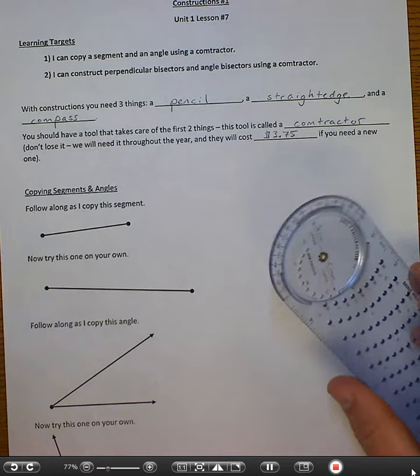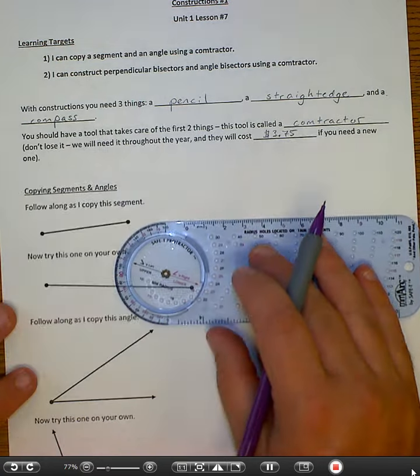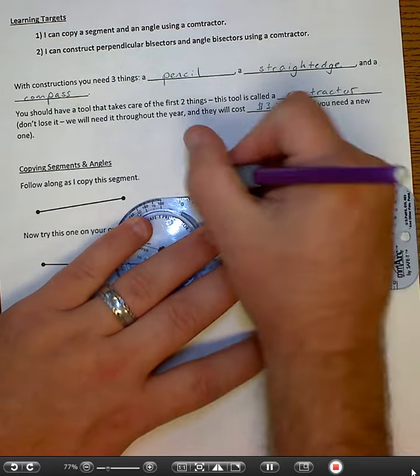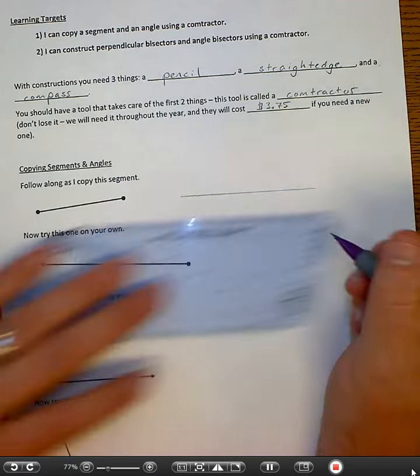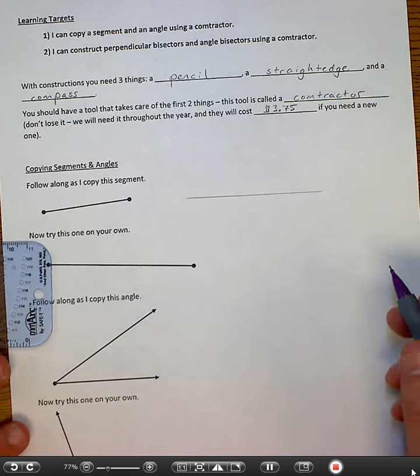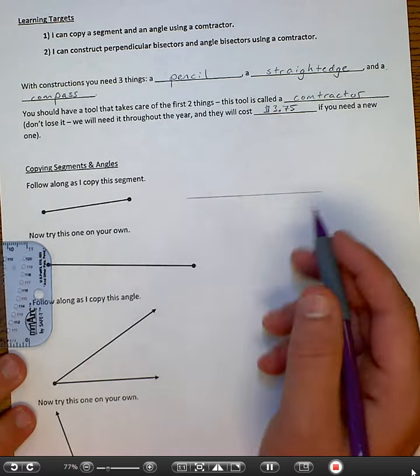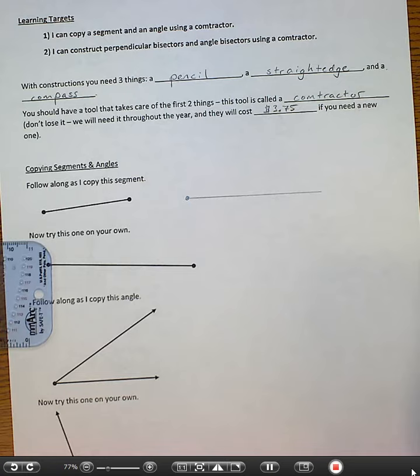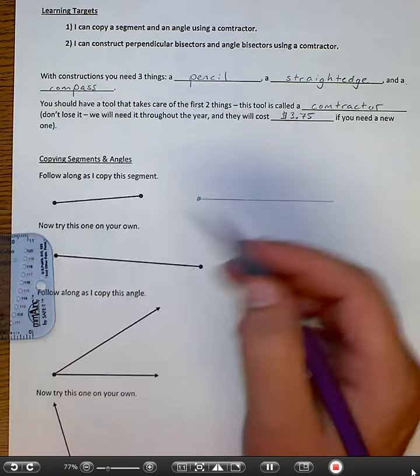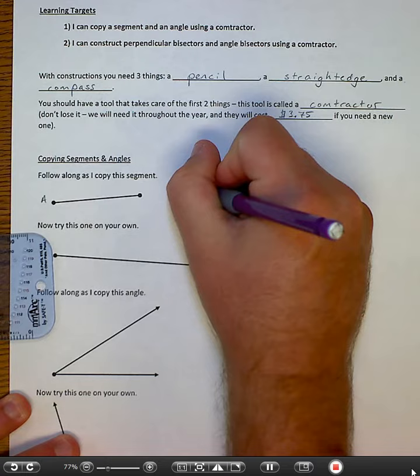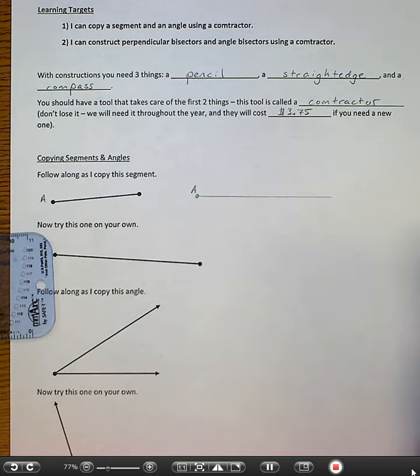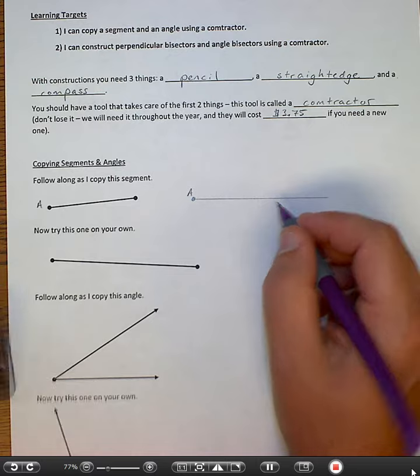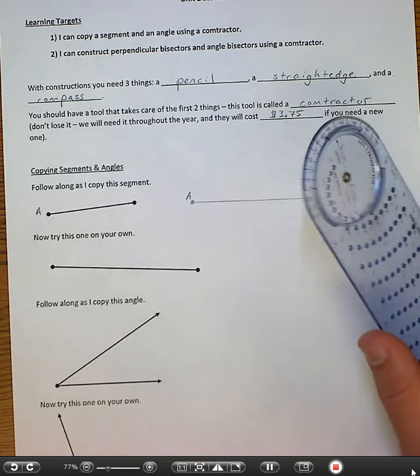But here we go. So I'm going to copy this segment. So what I'm going to do is I'm just going to go over here and I'm going to draw a horizontal line, and I want to make it definitely longer than that segment. When I say copy the segment, I'm talking about I want the exact same length of a segment. It doesn't have to be necessarily at that angle, but it just has to be the same length. So I'm going to make that horizontal line.